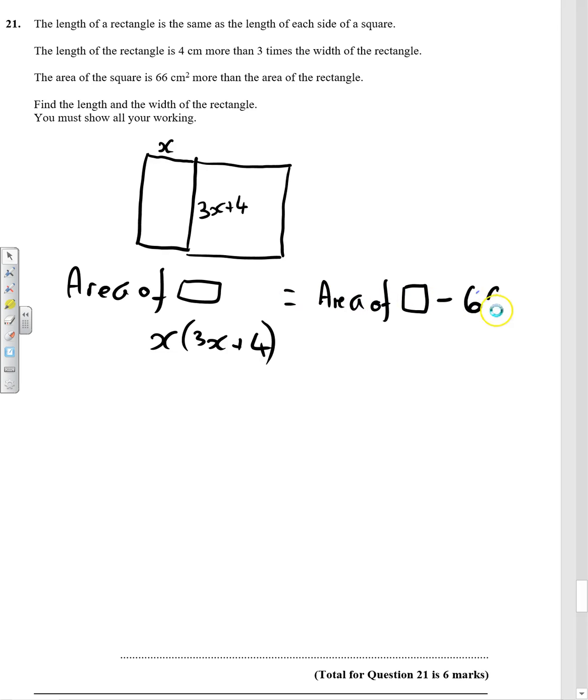So we need to take away 66 from that. The area of the square is, we've got the one dimension there, is that squared. Don't forget to take away the 66. So now we've actually got an equation.